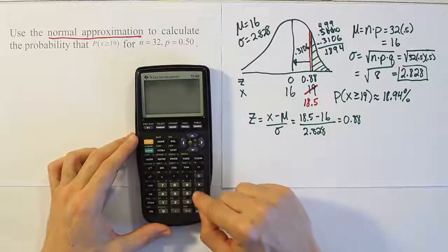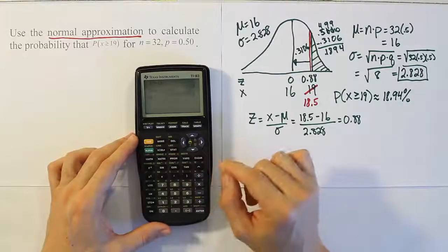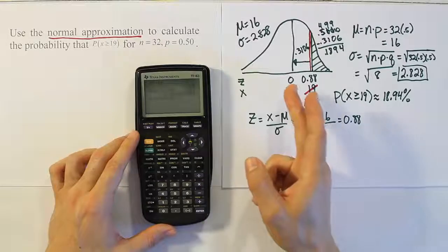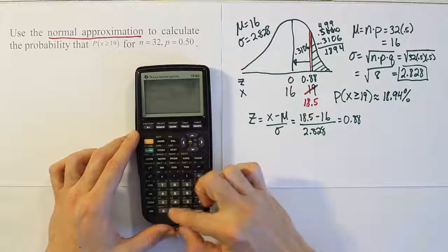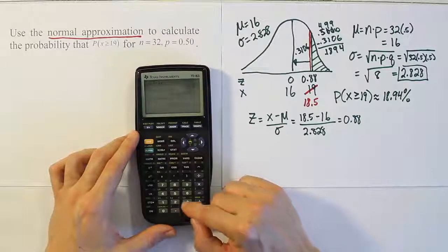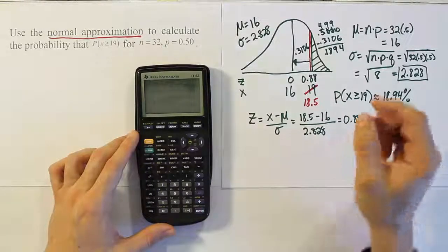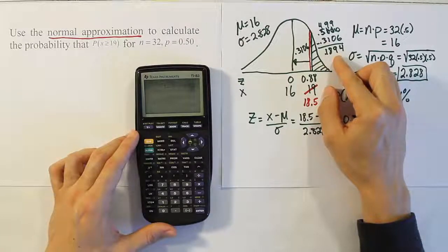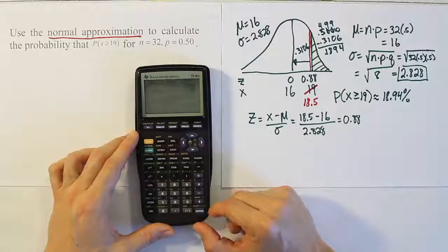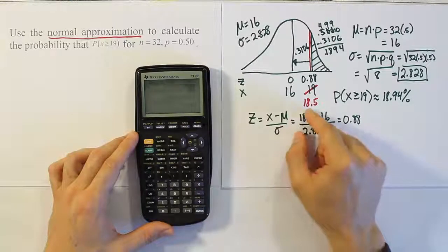The z-score when using 19 would have been 19 minus 16 divided by 2.828, giving us 1.06. The area from 0 to that z-score would have been 0.3554. If we had done 0.5 minus 0.3554, we get 14.46%. Instead of getting 18.9% which is very close to the actual answer, we would have gotten 14.5%, a much different answer.